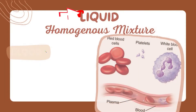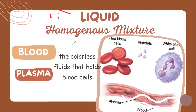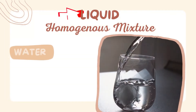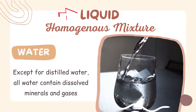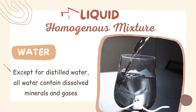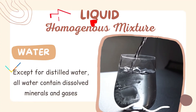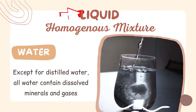Now let's proceed with the liquid homogeneous mixture. The best example is blood plasma located in our body. This is a colorless fluid that holds blood cells — we have the red blood cells, the platelets, and the white blood cells. Another example is water. Except for distilled water, all water contains dissolved minerals and gases, so water is a homogeneous mixture.